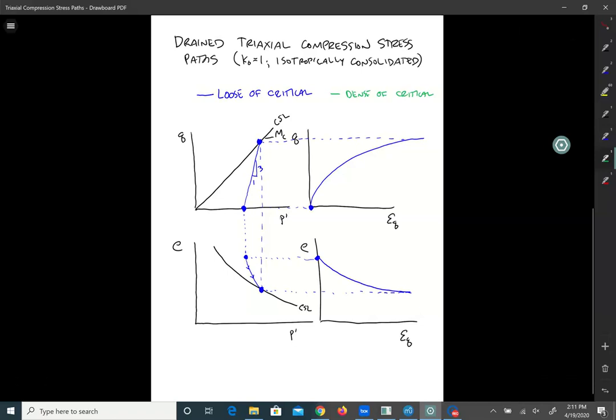All right, welcome back. Let's do the dense of critical one now. Again, we're going to start up here in the upper left quadrant. And we know a couple of things. The stress path has to have a slope of three to one. Now that it's denser critical, we also have to mobilize a peak friction angle that's bigger than the critical state friction angle. So if you want to, the first thing you could do is draw in that peak friction angle line. You know, it could come up like this, and this will be M peak.